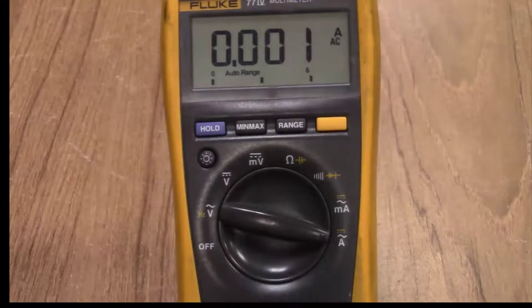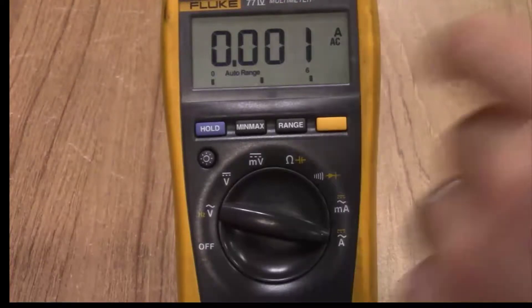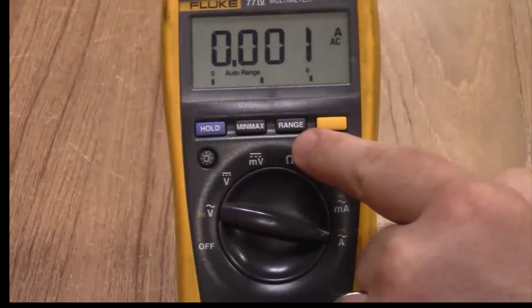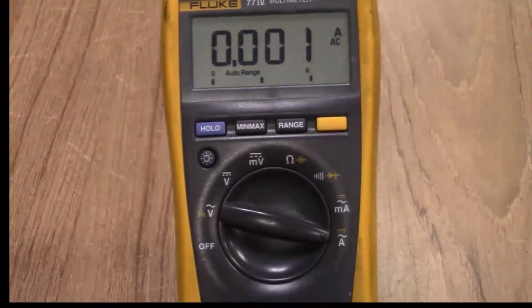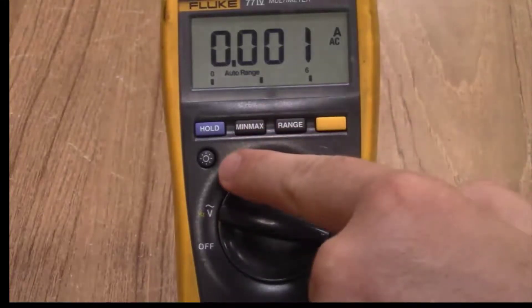And since this is an auto range multimeter it will automatically be set to auto range. But if you want to manually set the range you can press the range button and select the range that you would like manually as well. You also have a button here to control the backlight on the display.